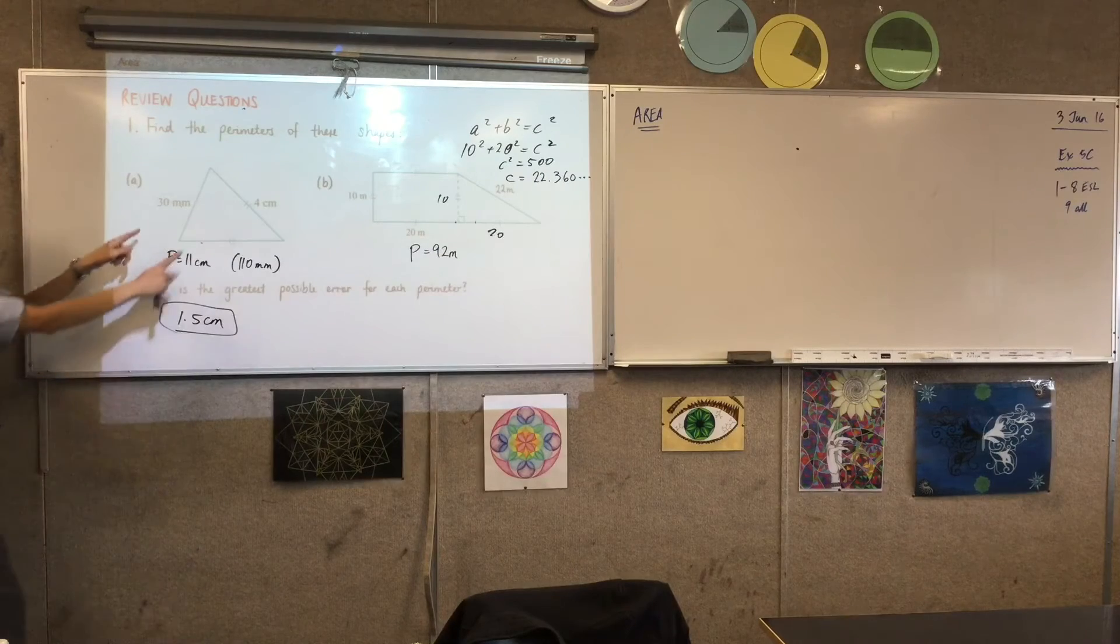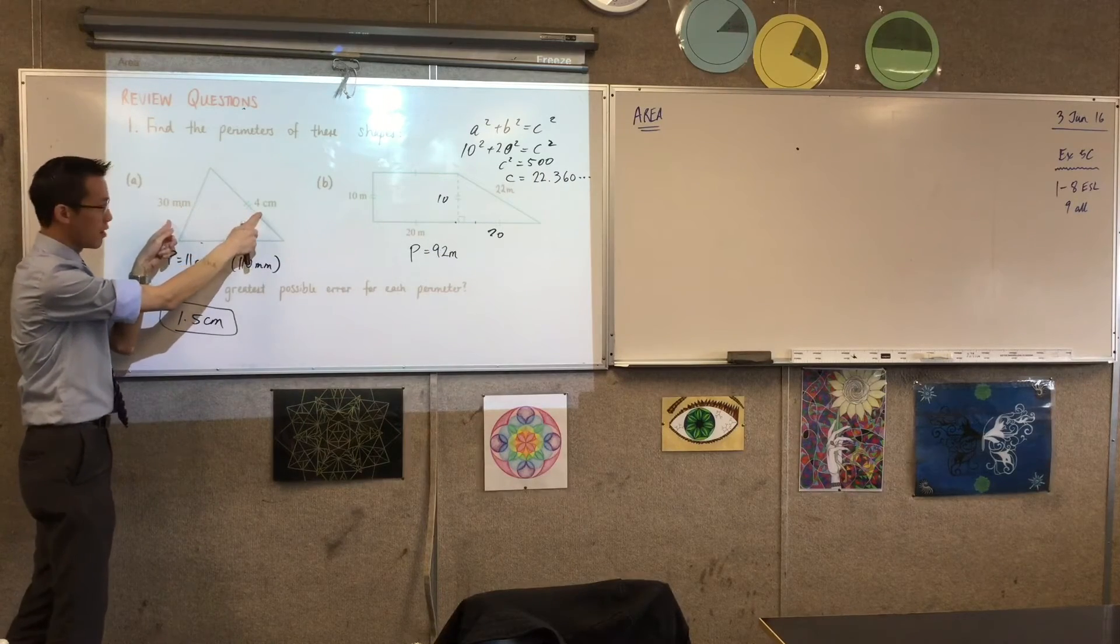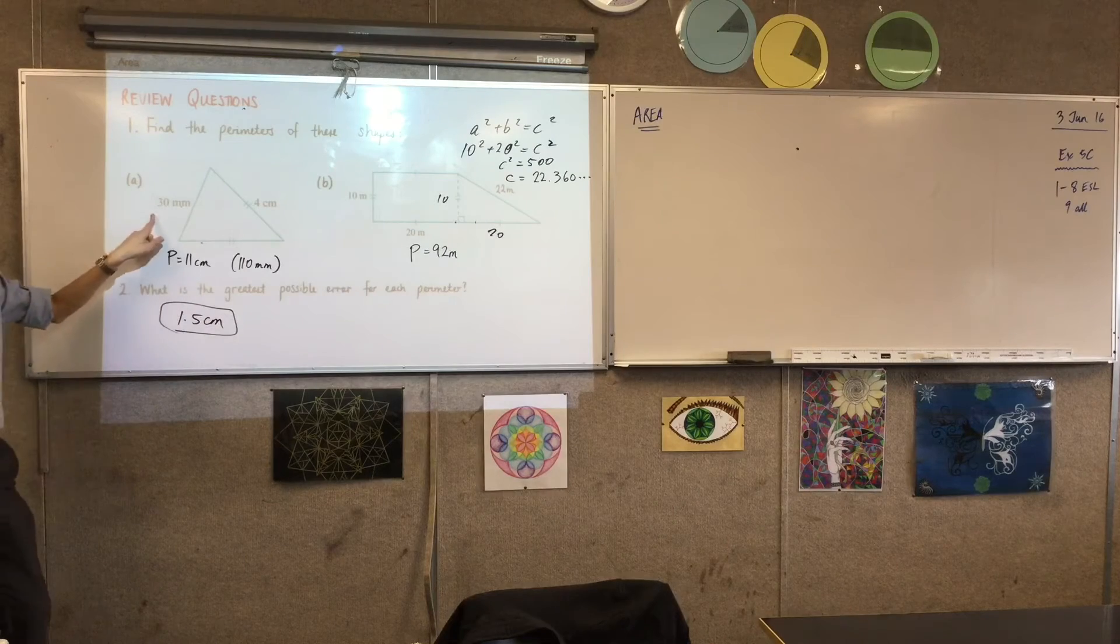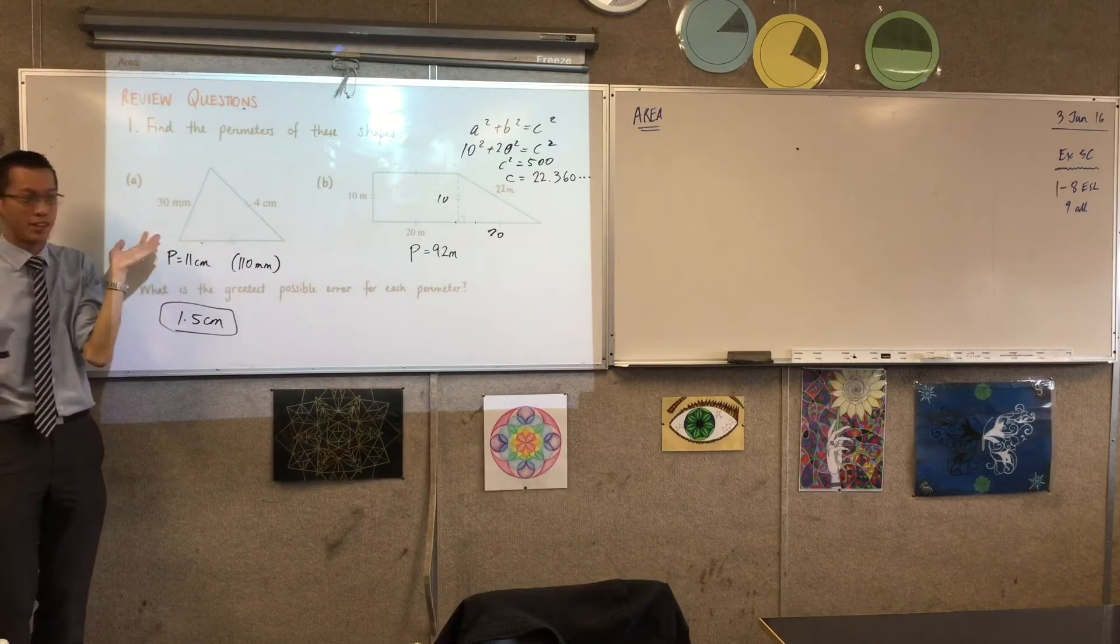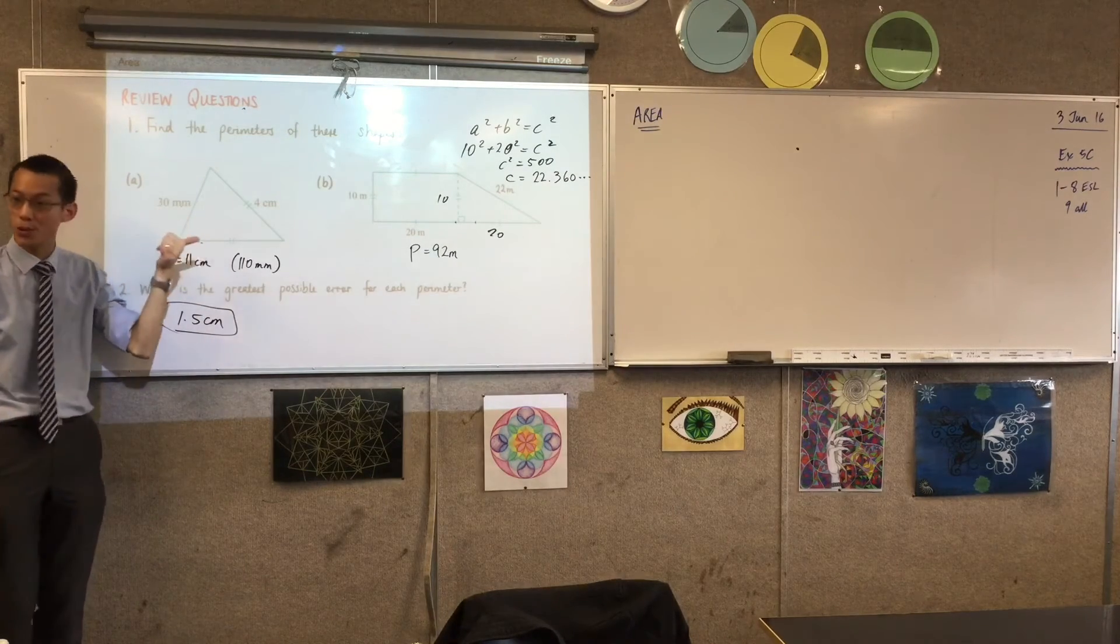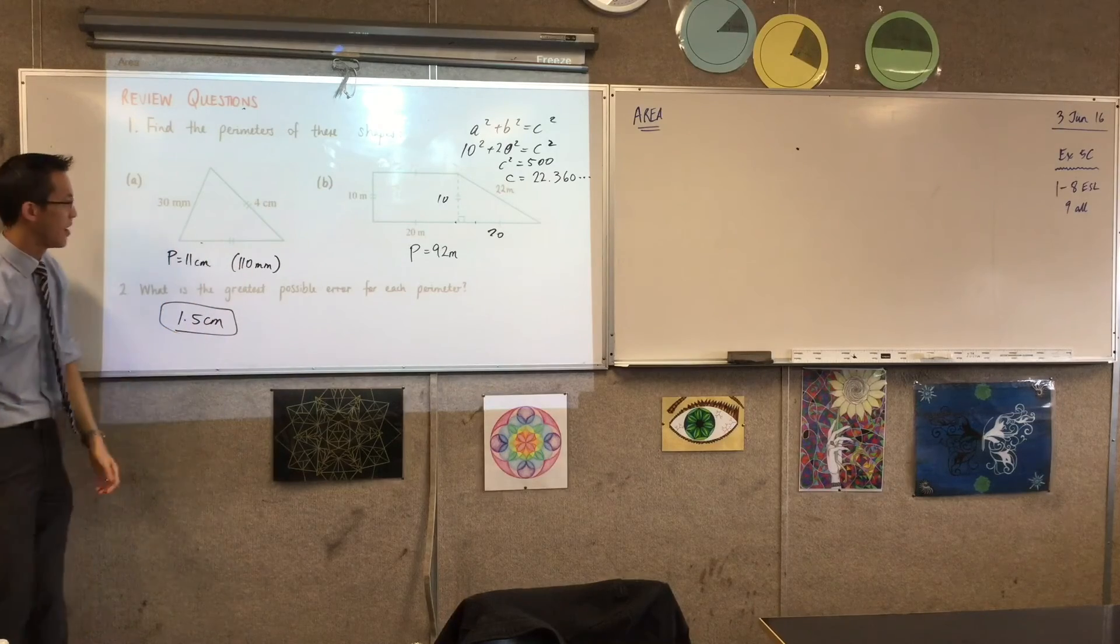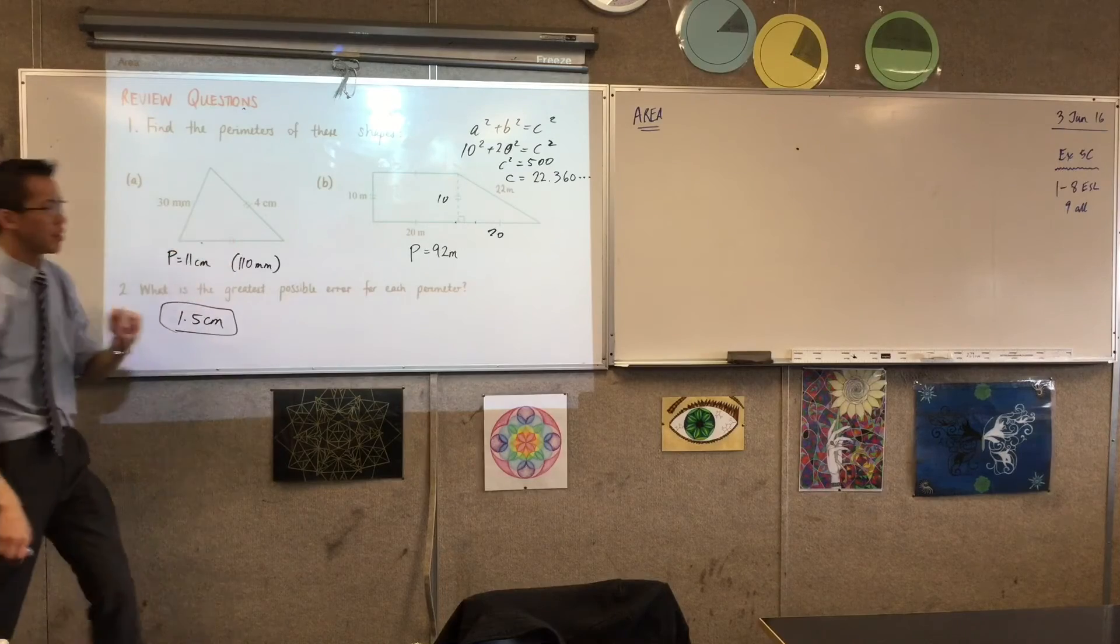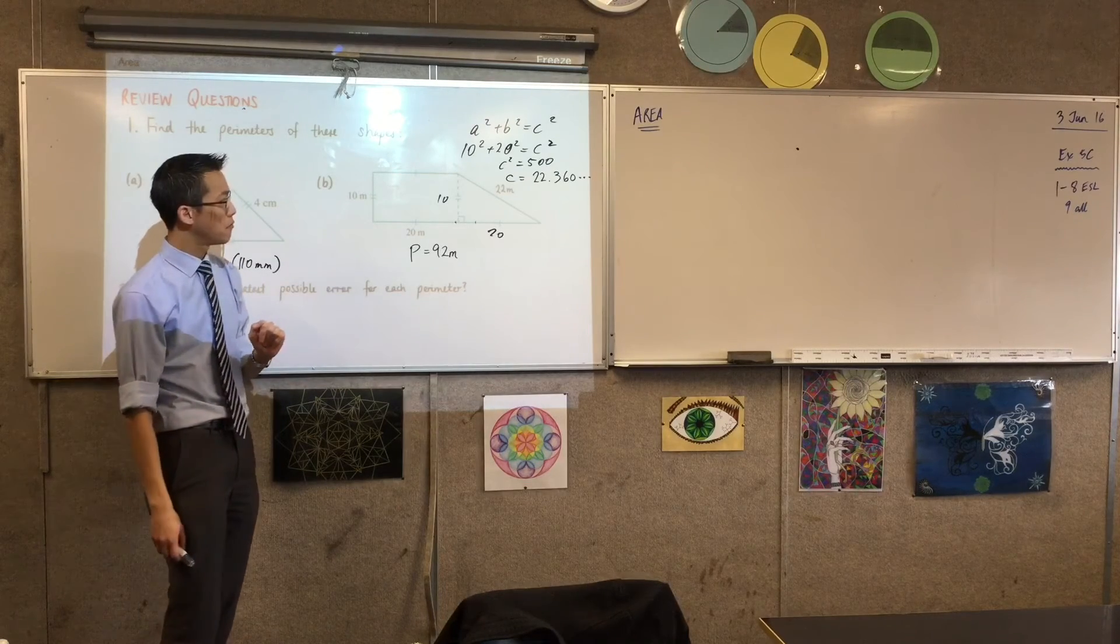Yeah, you look carefully at what accuracy is given to you, and then you say it's half of the limit of reading. And even though it says 30 millimeters, it's in millimeters, but it's 30. So that 0 could have come from rounding, right? So three times half a centimeter. Perfect. How about this one?